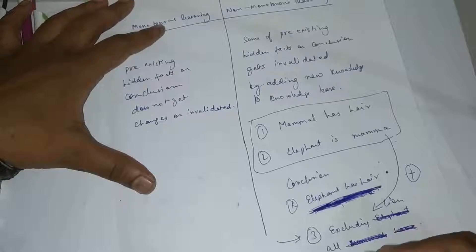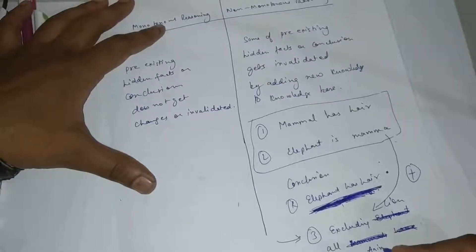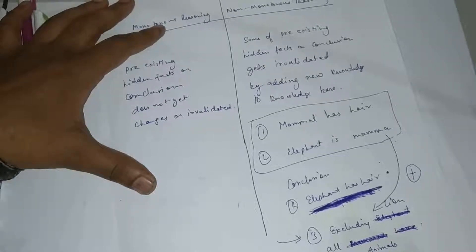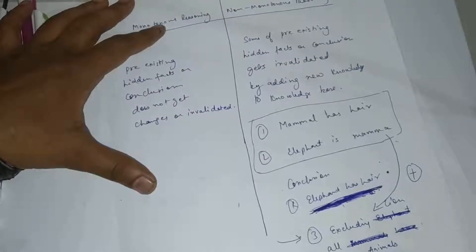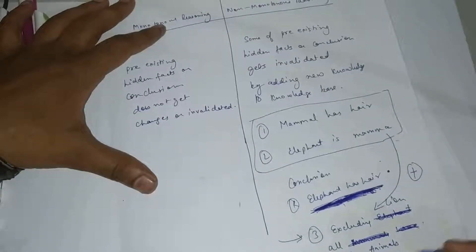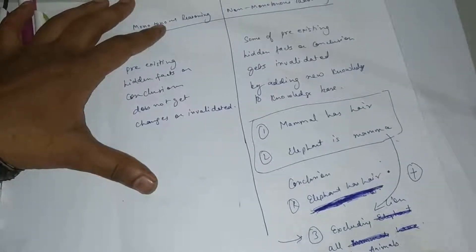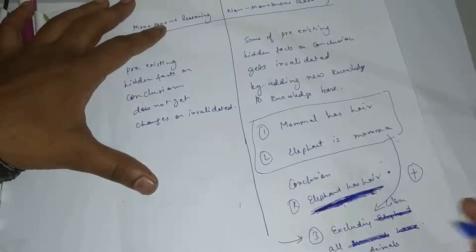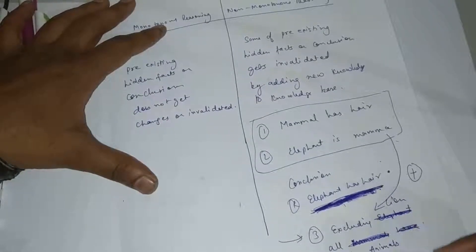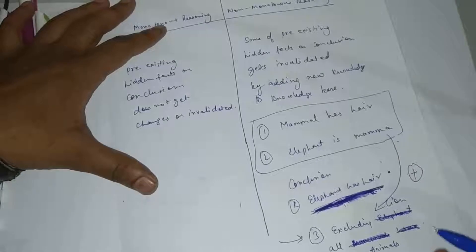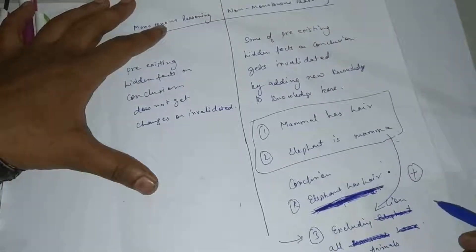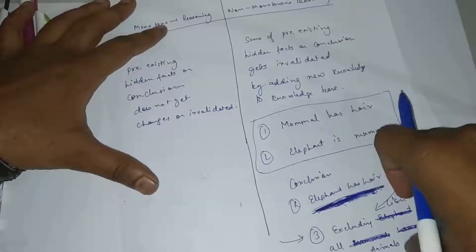For example, excluding lion, all animals have legs. I have taken this example - it's not logically perfect but just an example. If this fact and the elephant fact have no relationship, they are different things, so the pre-existing conclusions are not invalidated.